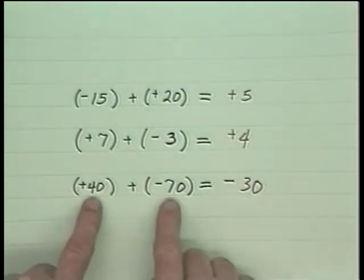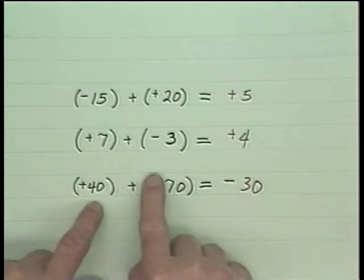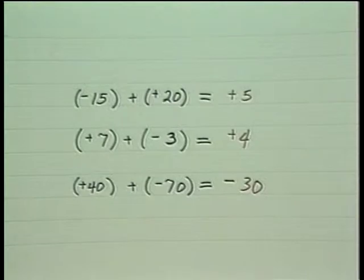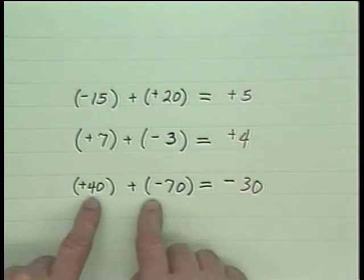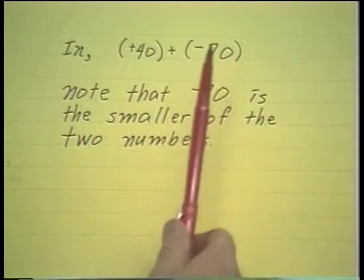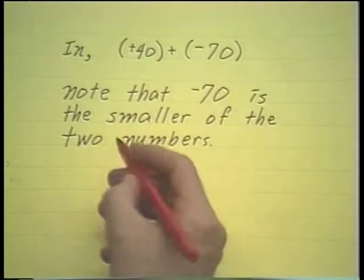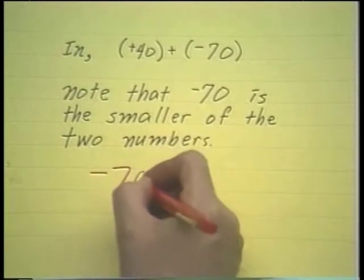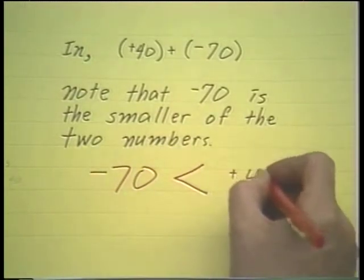Notice we said give to the answer the sign of the number which has the larger absolute value. Why don't we just say give it to the number which is largest? Well, as it turns out, this number is not larger than that — in fact, it's smaller. It's important to note that negative 70 is the smaller of the two numbers; that is, negative 70 is less than positive 40.